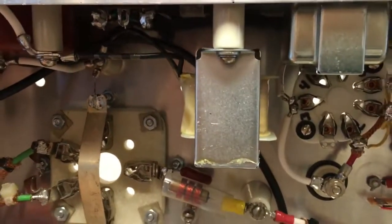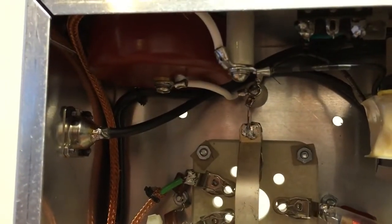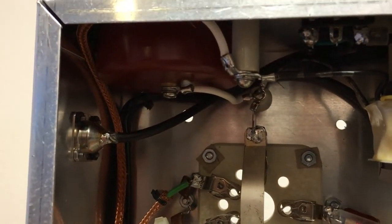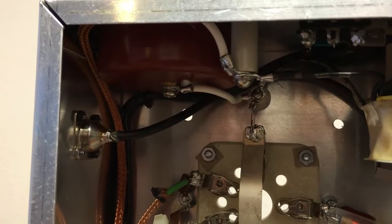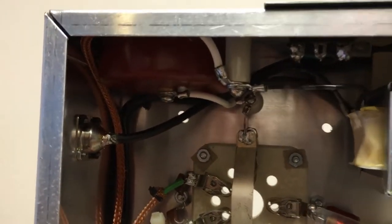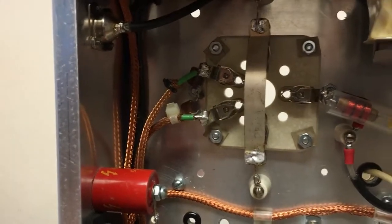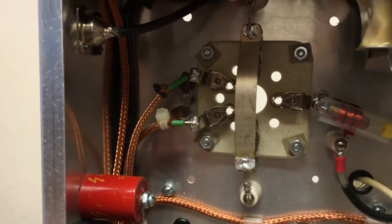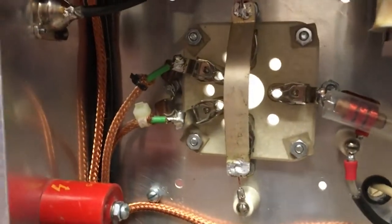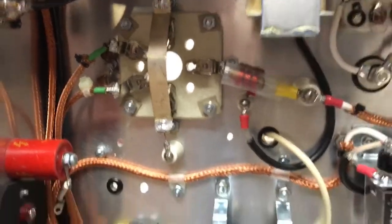There's the choke, the 10 Henry choke, and there's one of the big doorknobs. I'm forcing the modulation on the screen by a capacitive divider from the cold end of the RF choke coil. I have two others, I don't know which one I'm going to use, probably the smaller one here.